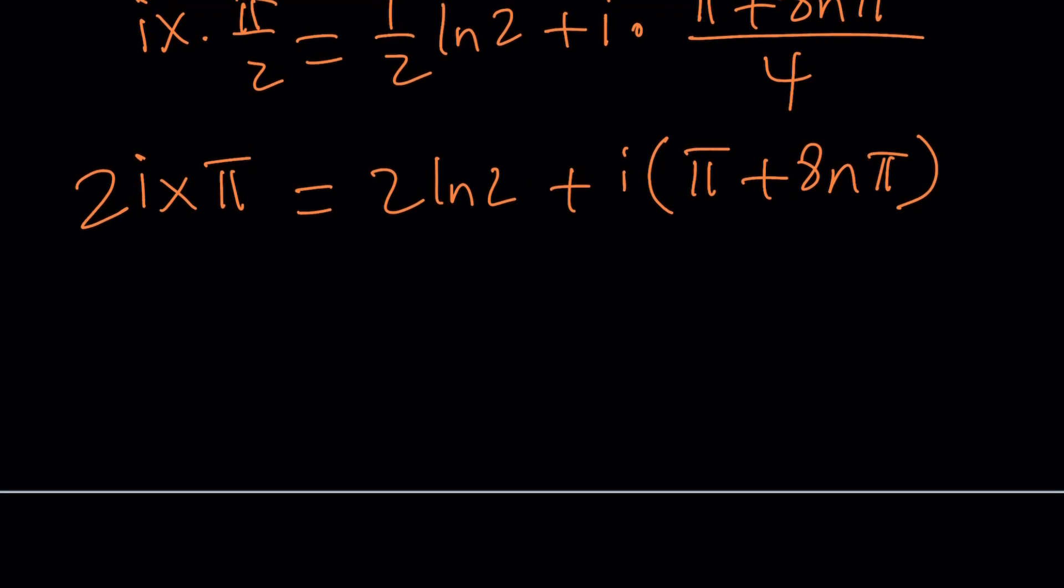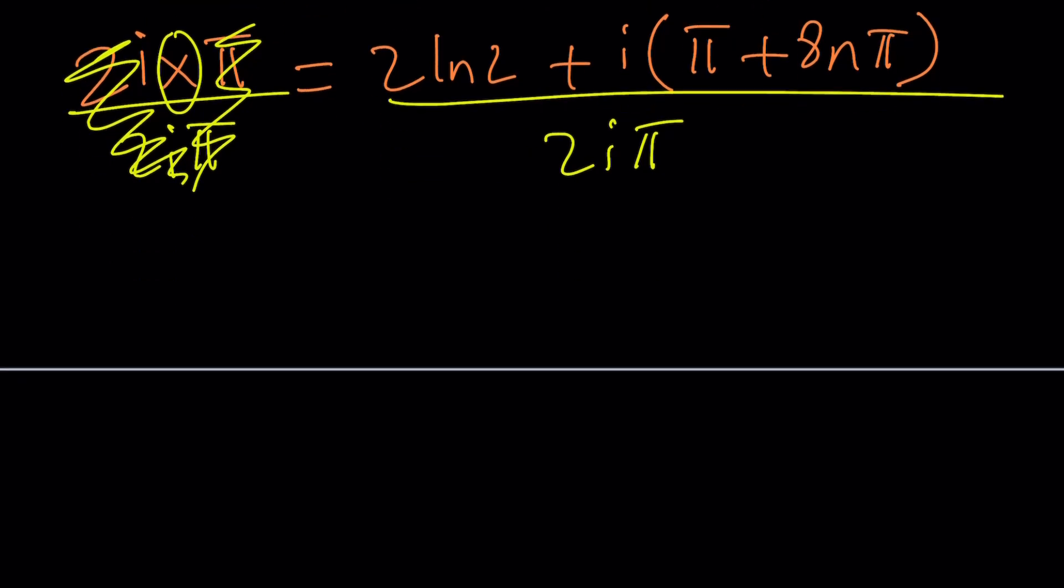Now let's go ahead and solve for x. To solve for x, you need to divide both sides by 2i pi. Let's do it. 2i pi. 2i pi cancels out. We end up with x. Great.